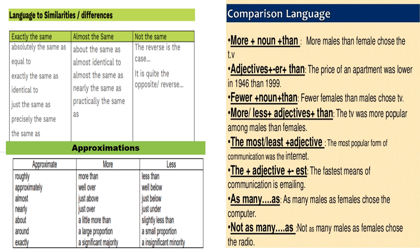If the activities or percentage of one group is more than the other — for example, the number of boys who play a game is more than the number of girls — then you can say: more than, well over, just above, just over, a little more than, a large proportion, a significant majority. And if it is less, you use the words: less than, well below, just below, just under, slightly less than, small proportion, an insignificant minority.